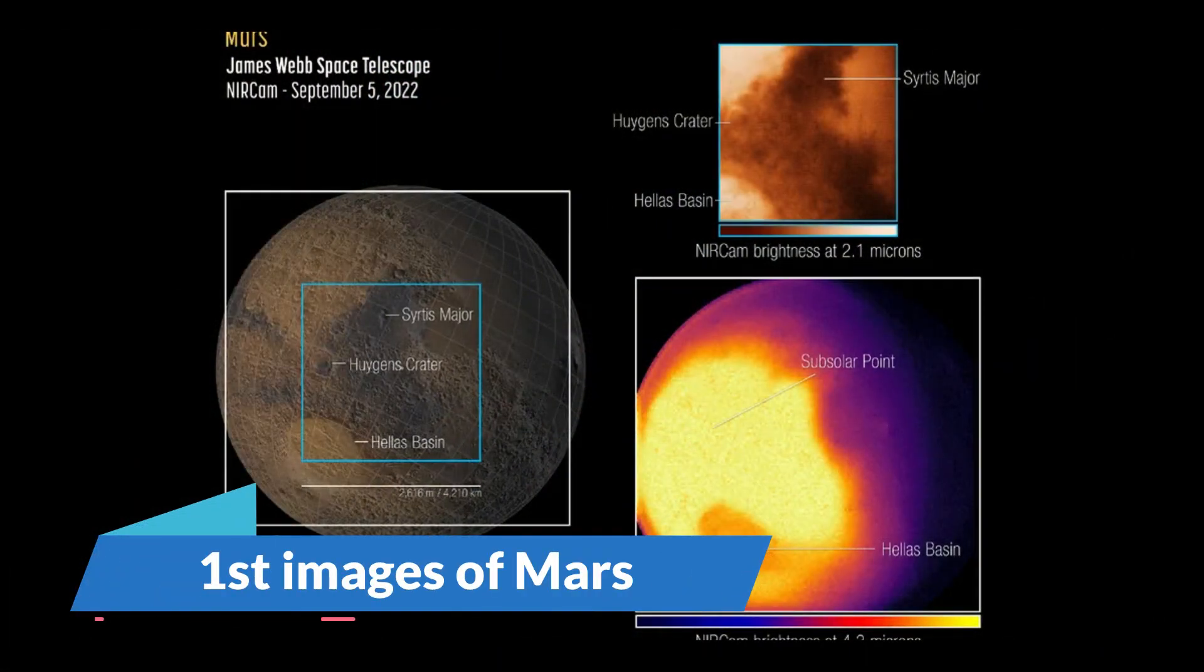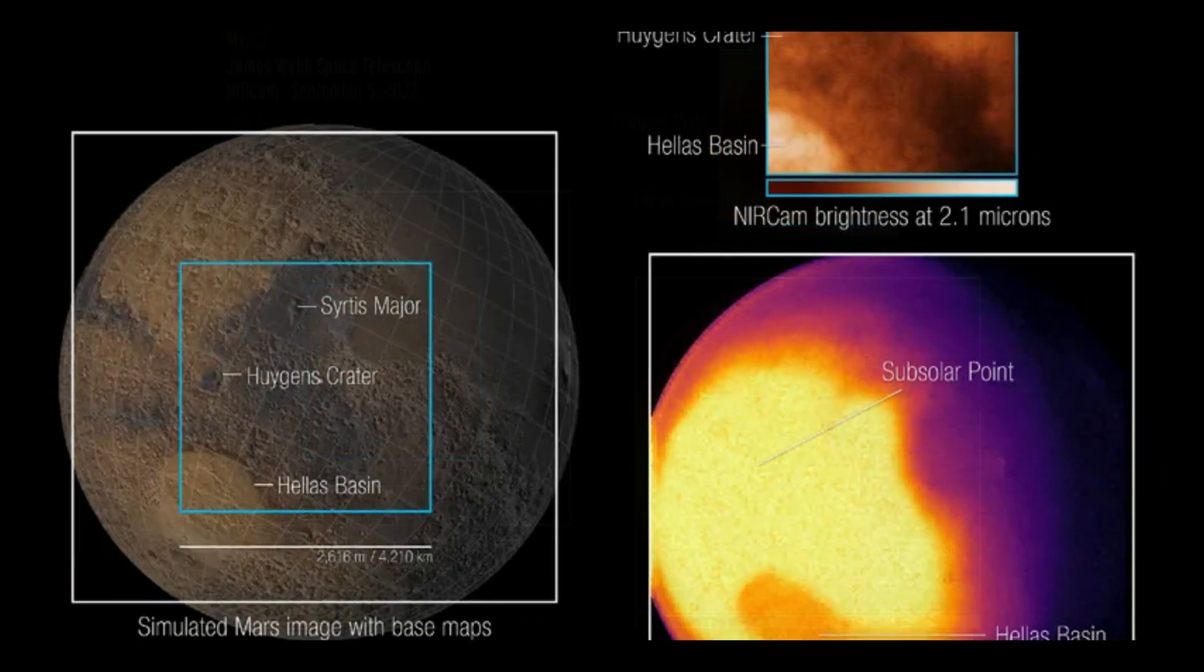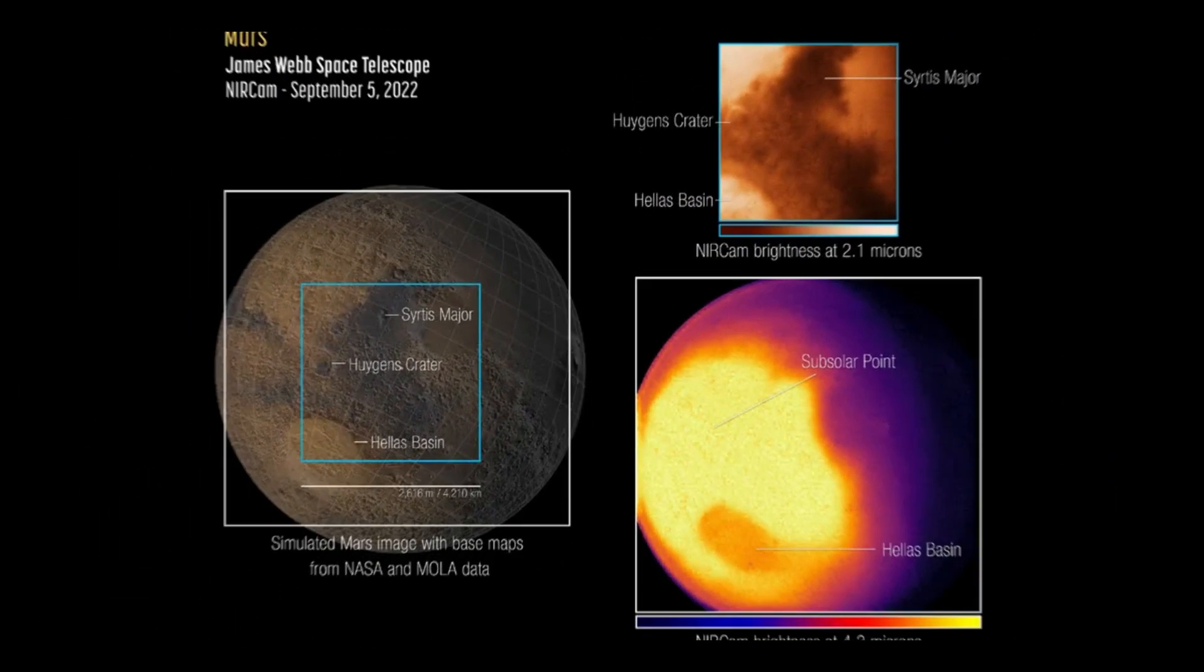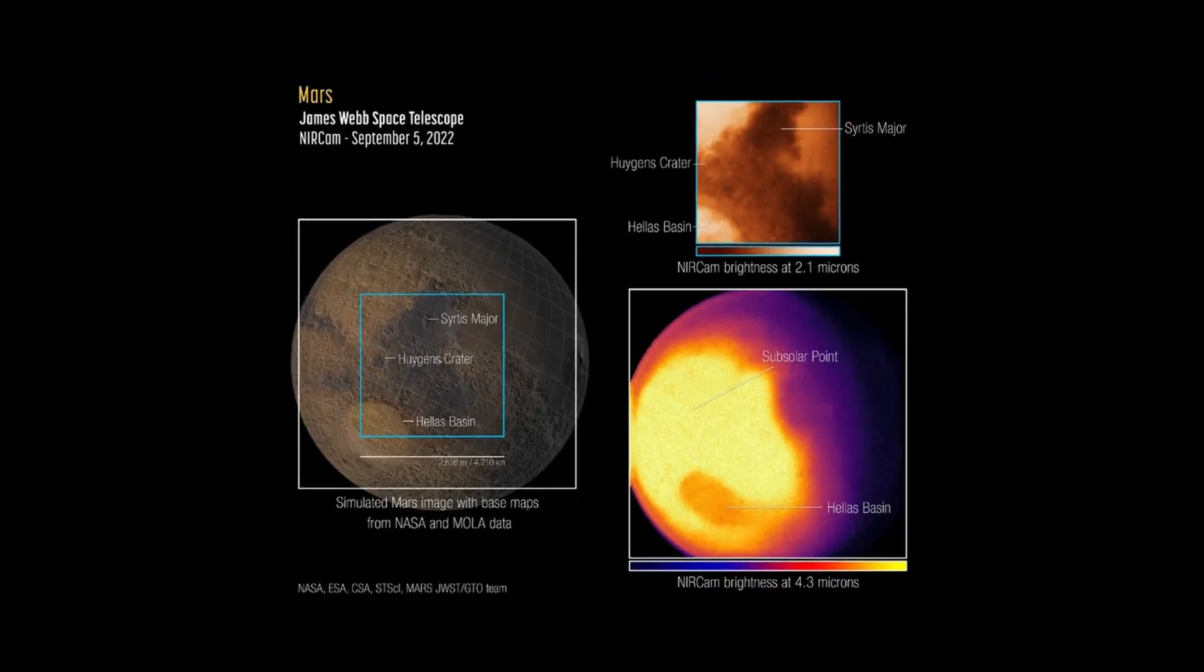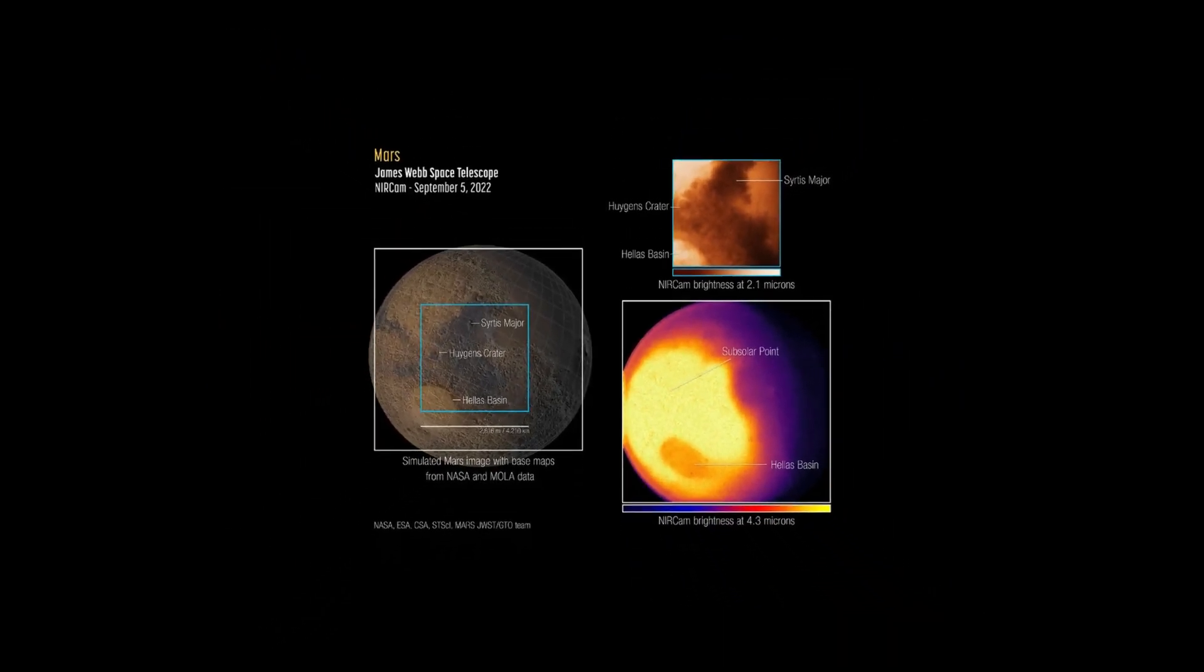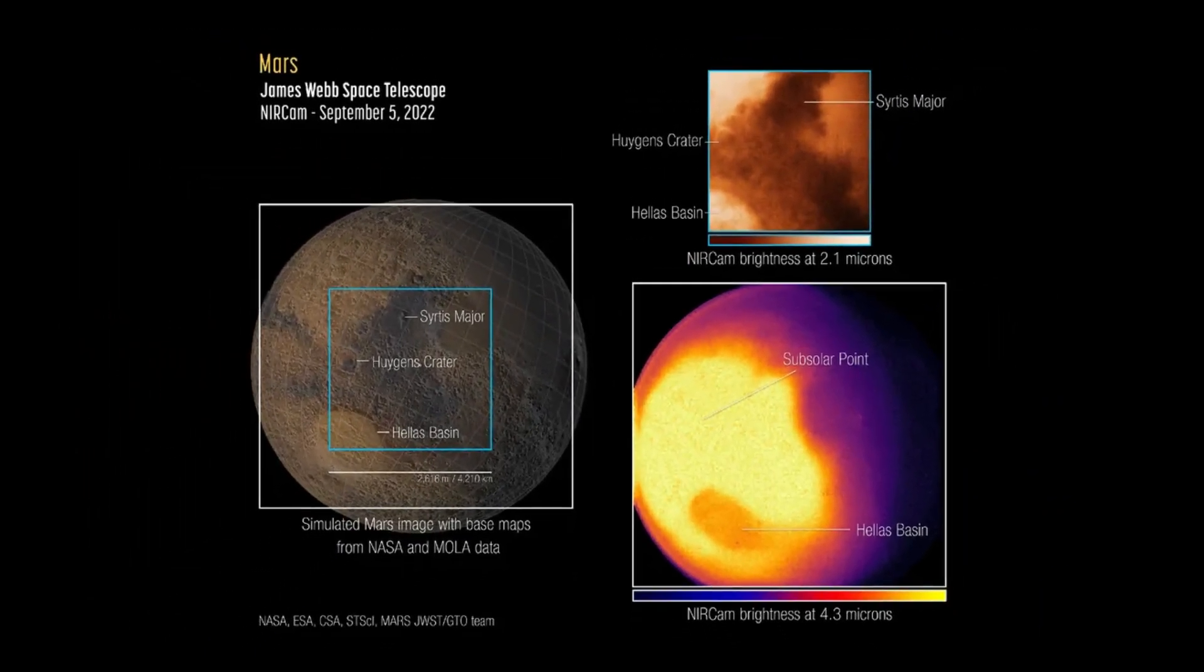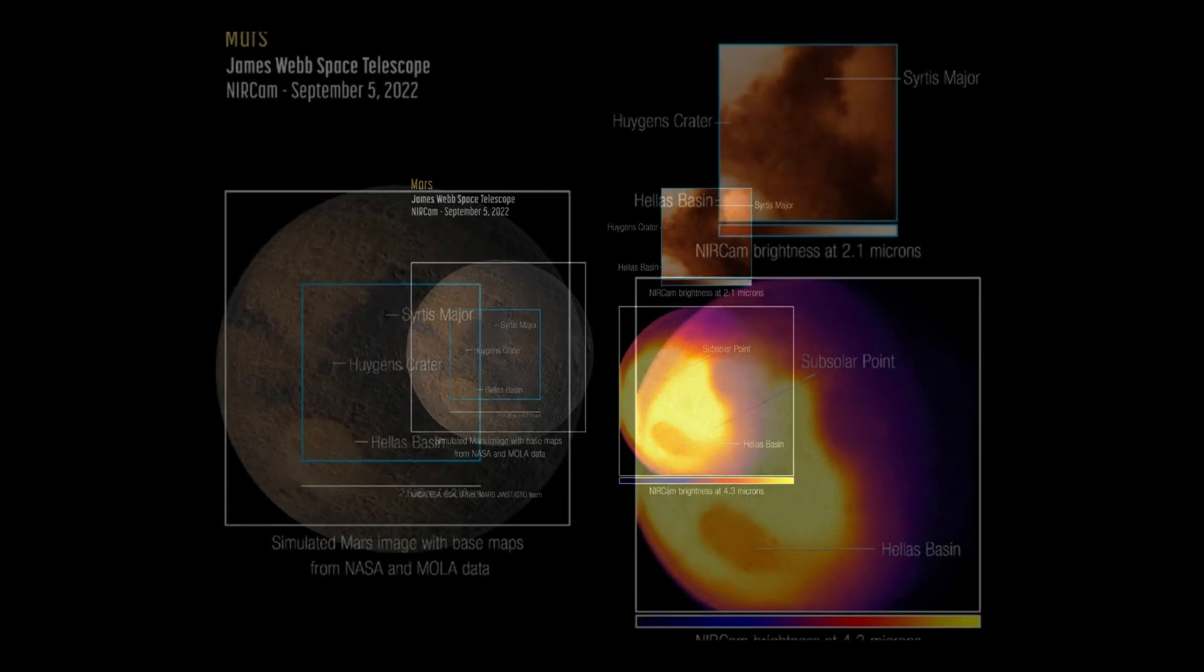Number 3. First images of Mars. The James Webb Space Telescope has taken its first photos of Mars, capturing infrared light emitted by the red planet with exceptional sensitivity. The first photos and spectra of Mars from the James Webb Space Telescope were revealed on Monday during the Europlanet Science Congress 2022.